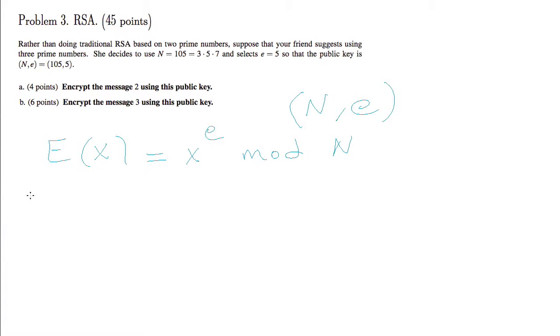So part a we want to encrypt message 2. 2 to the power 5 mod 105 is 32, very simple.